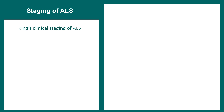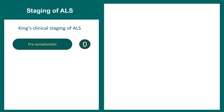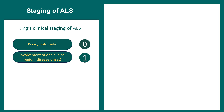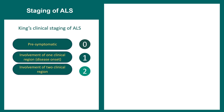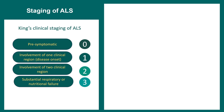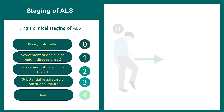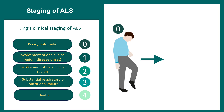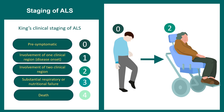King's clinical staging classifies ALS starting from Stage 0, which is pre-symptomatic, through Stage 1 involving one clinical region at disease onset, Stage 2 involving two clinical regions, Stage 3 with substantial respiratory and nutritional failure, and Stage 4 being death. For example, in Stage 0 there are very mild or almost no symptoms, while in Stage 2 there would be paralysis and severe symptoms.